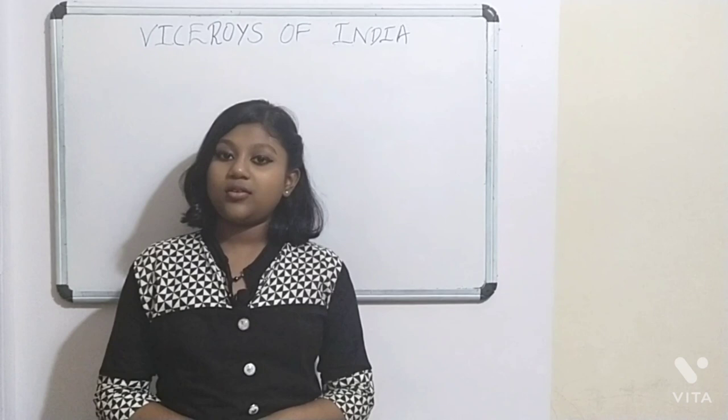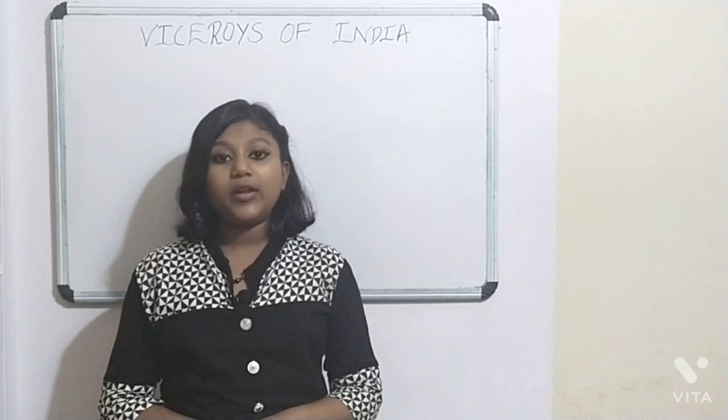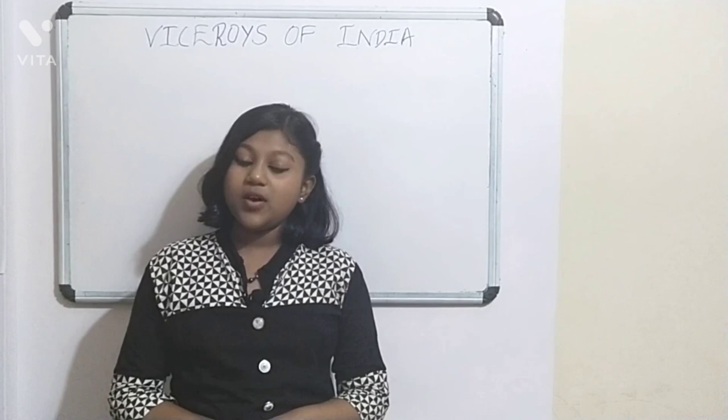Following the Queen's Act of 1858, the governing powers of the East India Company were to be vested with the Queen, and India came under the direct control of Queen Victoria. The post of Governor General of India was renamed as Viceroy of India, and Lord Canning, who was the then Governor General, became the first Viceroy of India.